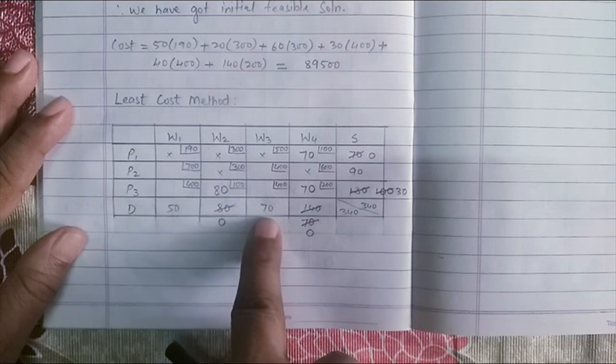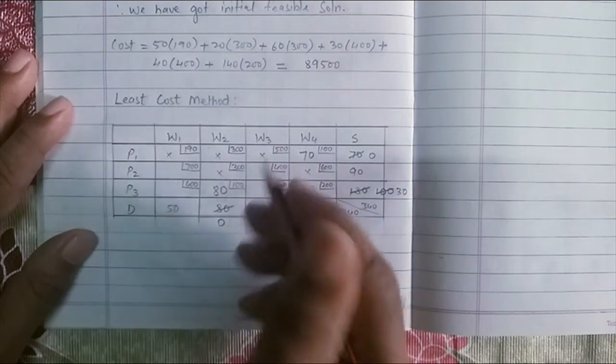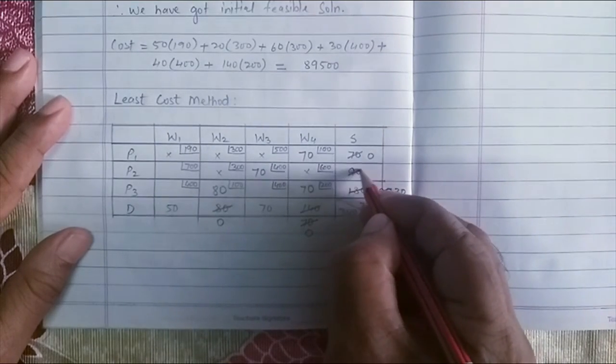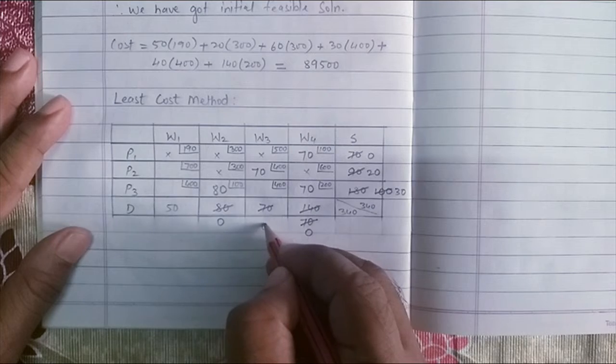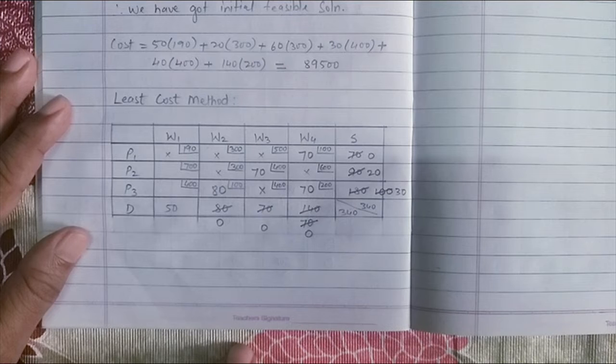So which is the value which I have to assign? 70 and 90. Least is 70. So subtract 70 from 90, I get 20. A 0 here put across in this cell because W3 has been completed.